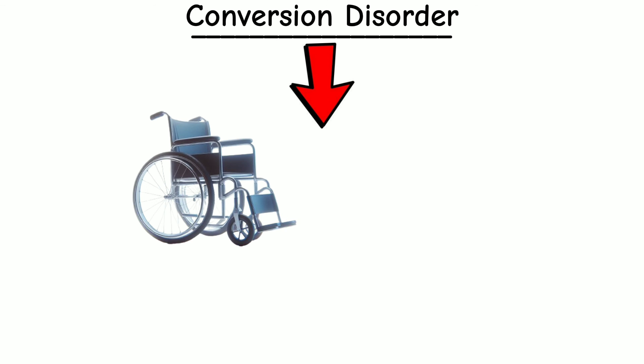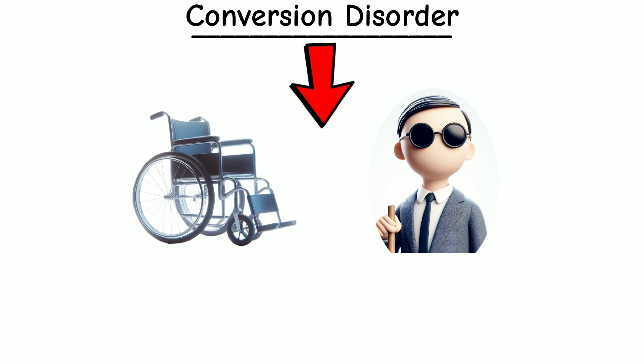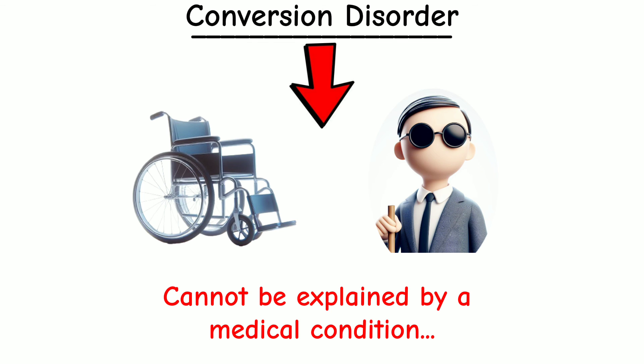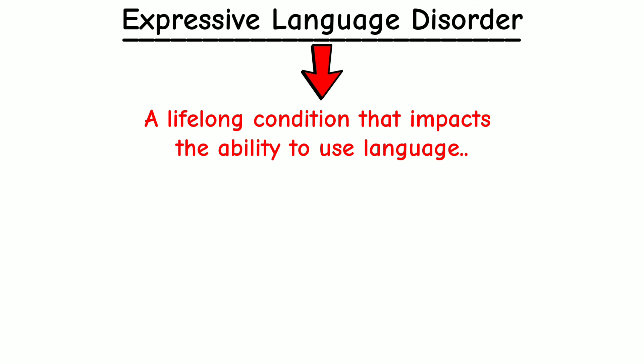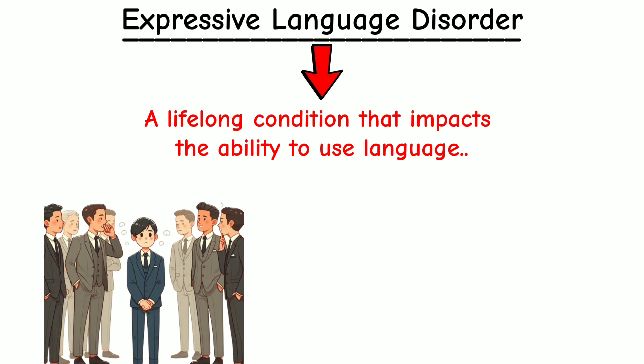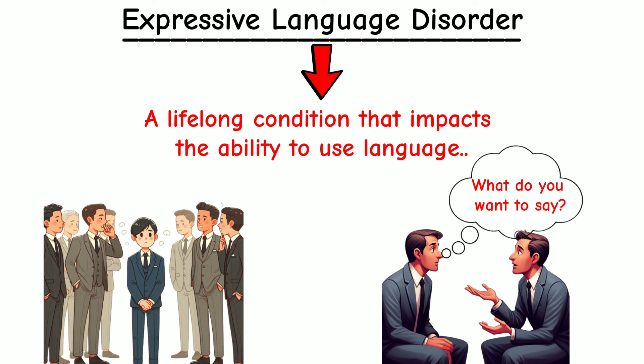Conversion Disorder involves neurological symptoms, such as paralysis or blindness, that cannot be explained by a medical condition and are thought to be linked to psychological factors. Expressive Language Disorder is a lifelong condition that impacts the ability to use language, where people understand what others are saying but have a hard time expressing their own ideas when they speak.